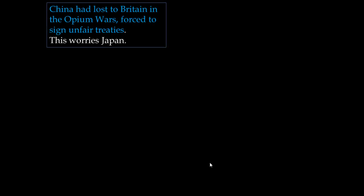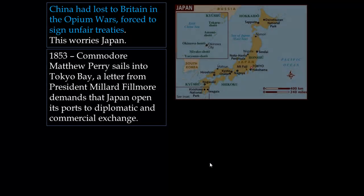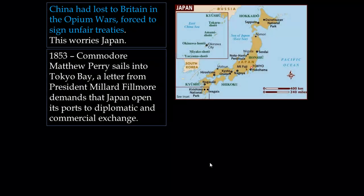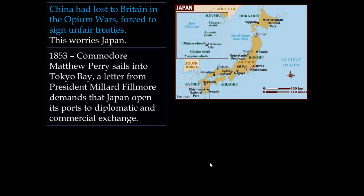We need to look at China briefly. China had lost the Opium Wars to Britain, and Britain forced China to sign unfair treaties, basically opening up China to Britain. This worried Japan — China was just across the Sea of Japan. Japan's biggest fears came true in 1853 when Commodore Matthew Perry of the United States sailed into Tokyo Bay.